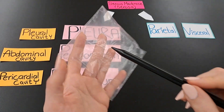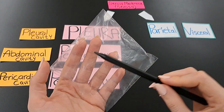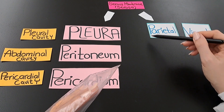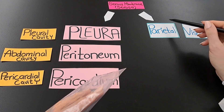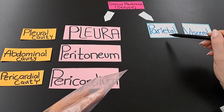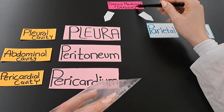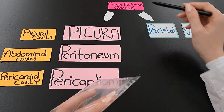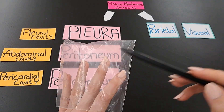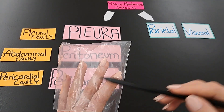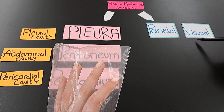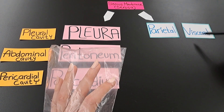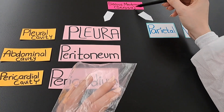The portion of the membrane that lines the cavity is the parietal cirrhosa. The portion of the membrane that covers the organ is the visceral cirrhosa.